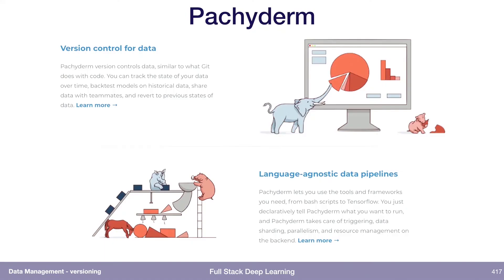Pachyderm is a very similar thing — it version controls data and it's language agnostic. They make some claims I don't fully understand; it says Pachyderm takes care of triggering data sharding, parallelism, and resource management, which sounds like a lot. Are they managing my infrastructure at this point? This is my sticking point with these specialized data solutions — they very quickly get into just managing your infrastructure for you, which you might not necessarily want.